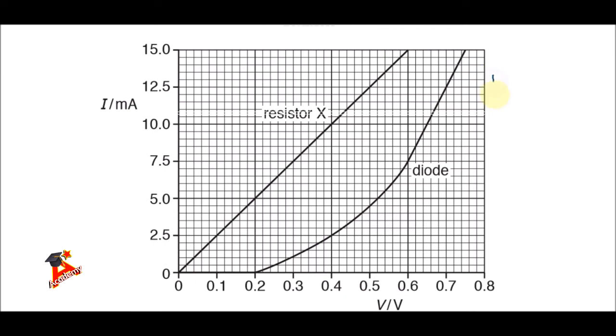The resistance here is voltage over current, which gives us 0.6 over a current of 7.5 milliamps. And this gives us 80 ohms.